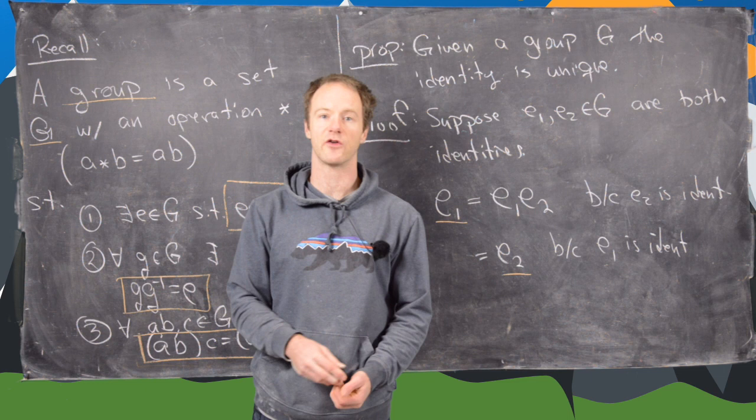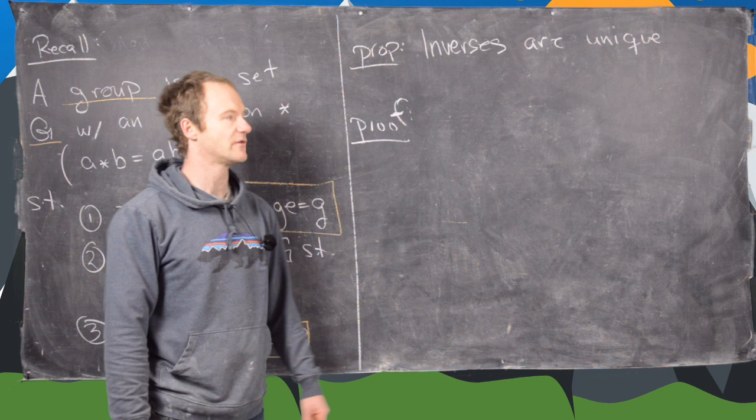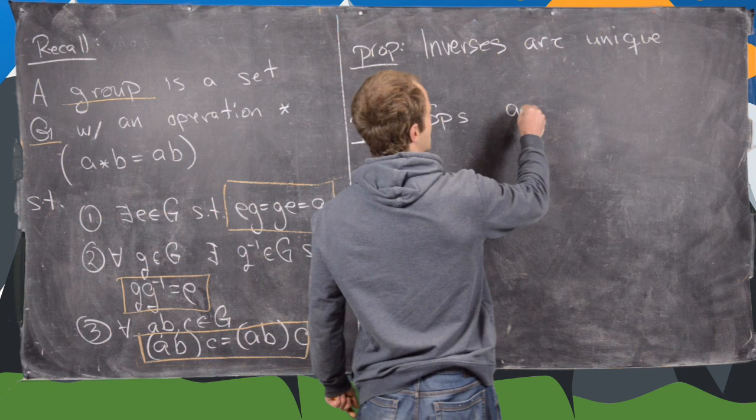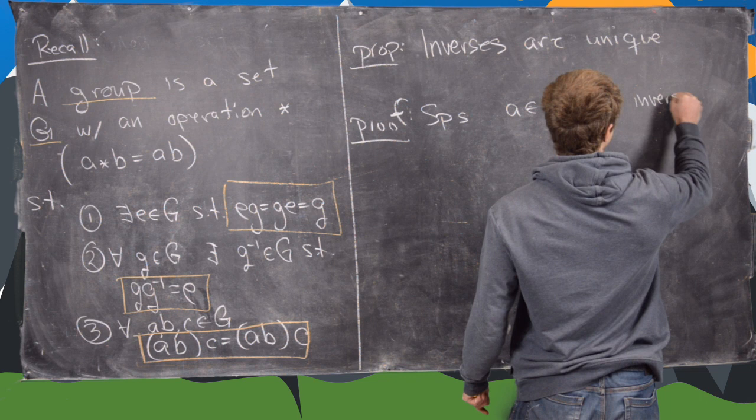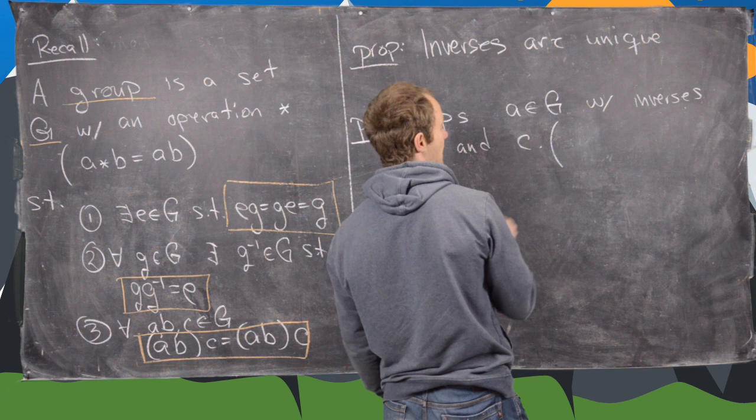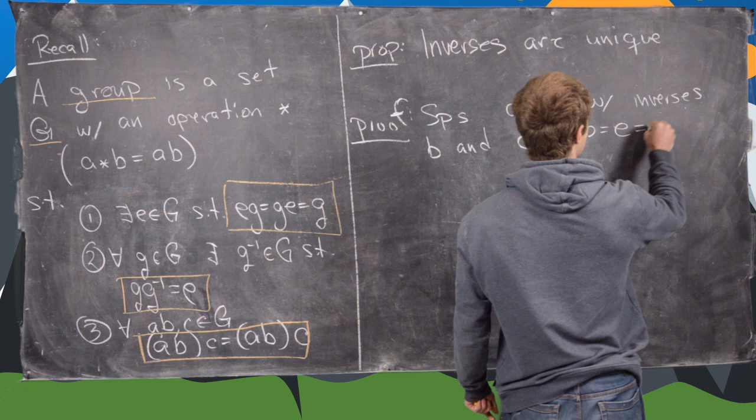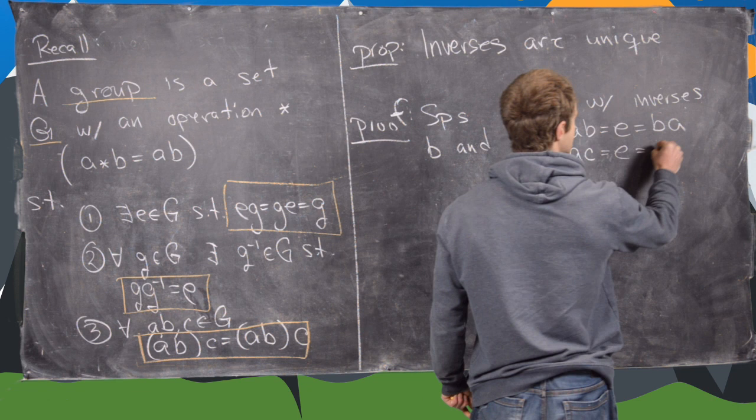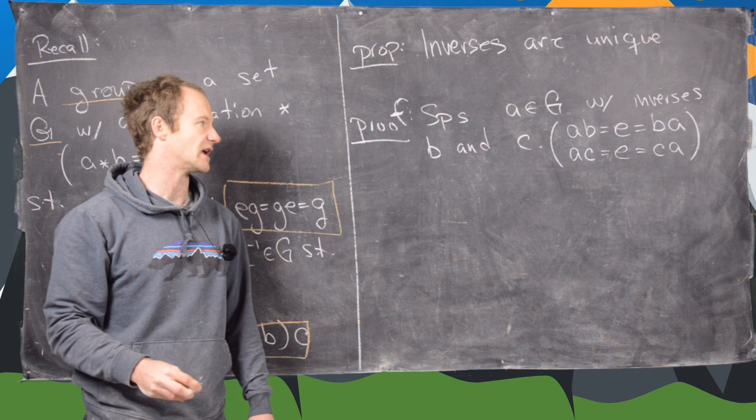So the next property we want to prove is that inverses in a group are unique. So let's suppose that we have an element A in our group G with inverses B and C. The fact that B and C are inverses of A gives us AB equals the identity and that's the same as BA. And then AC is the identity and that's the same as CA. So that's the definition of B and C being inverses of A.